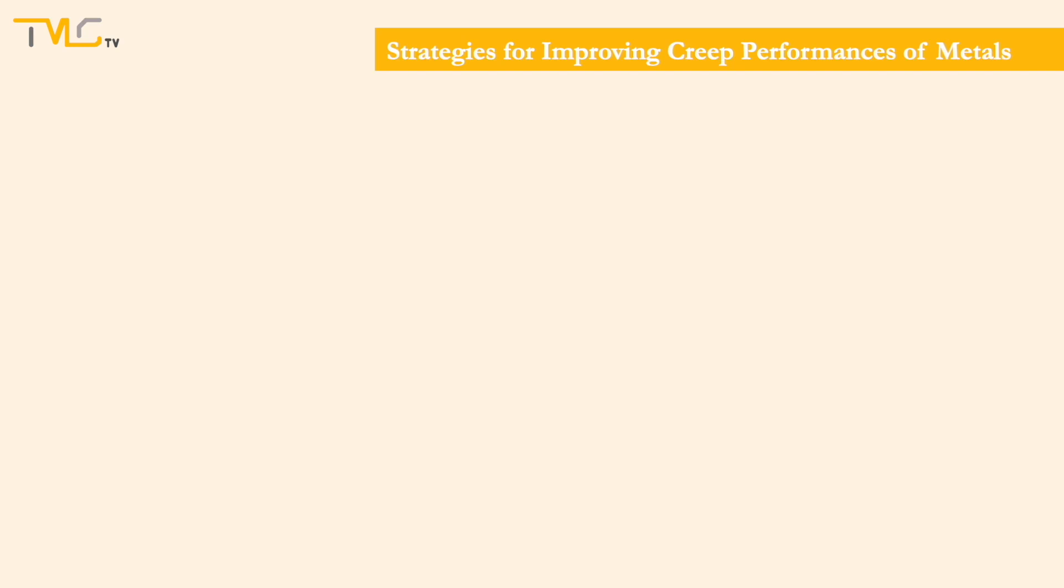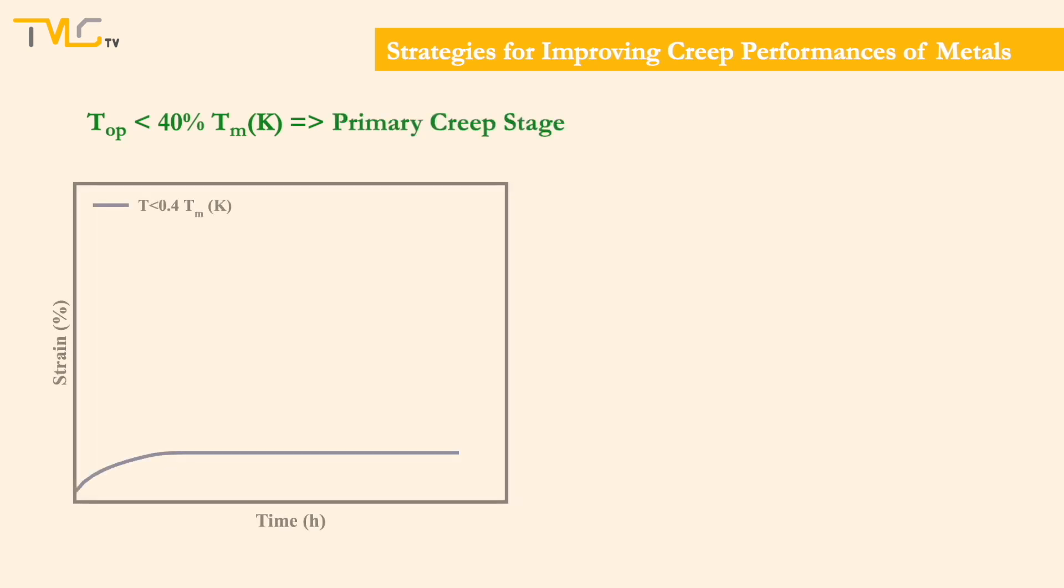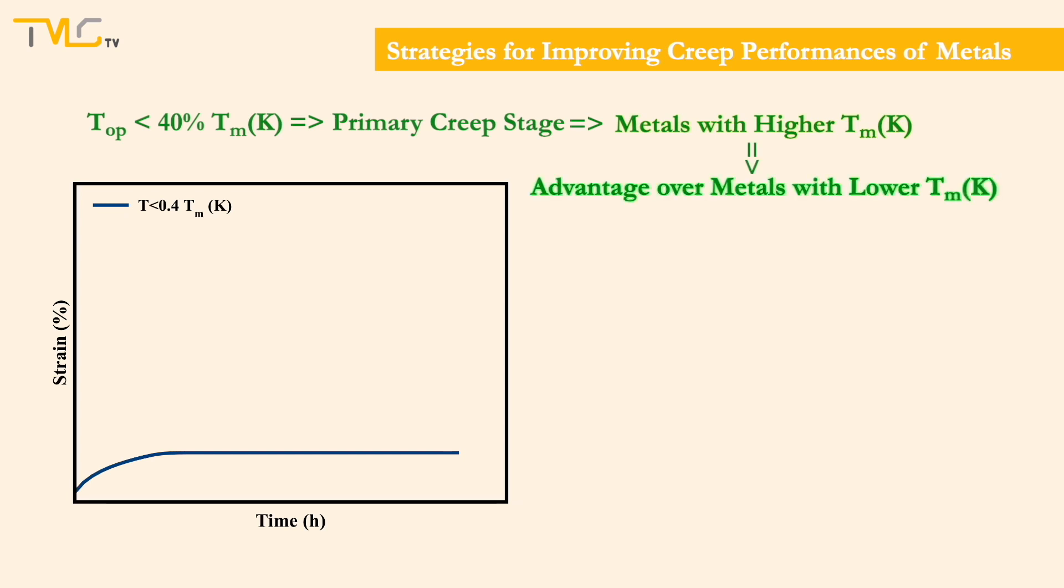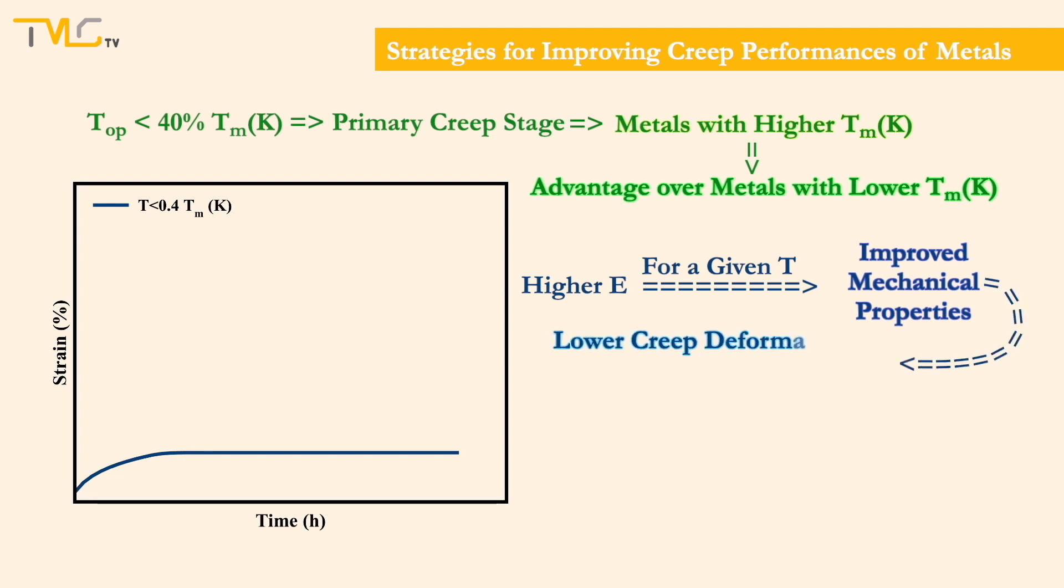First of all, only primary stage is observed, so long as the operating temperature is below 40% of the absolute melting temperature of the metals. Then, any metal having higher melting temperature will have some inherent advantage compared to those with lower melting temperatures. Although having a high elastic modulus does not necessarily improve the high temperature resistance of metals, it offers higher mechanical properties, enabling lower creep deformation for a given operating condition compared to a metal with a lower elastic modulus.